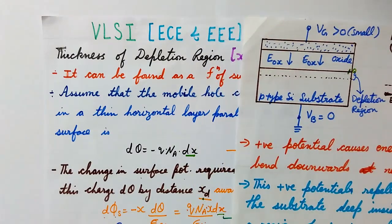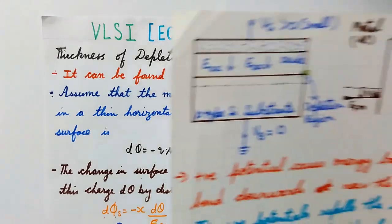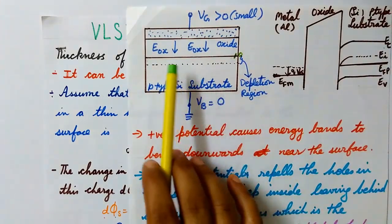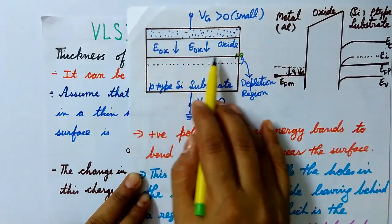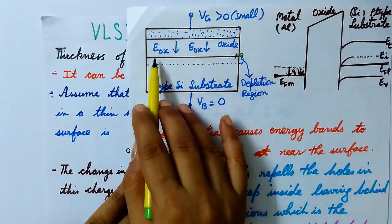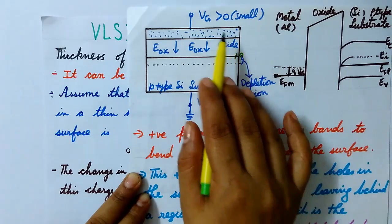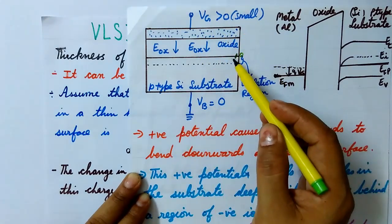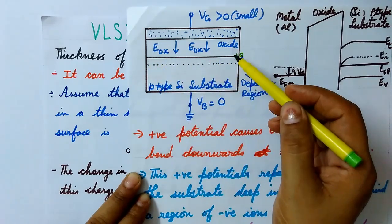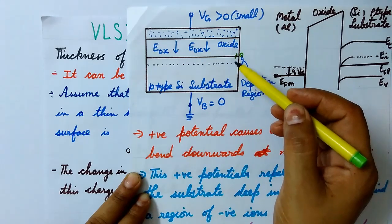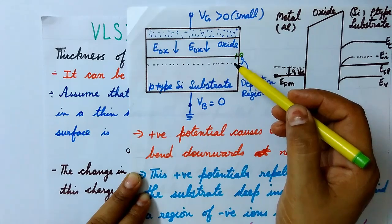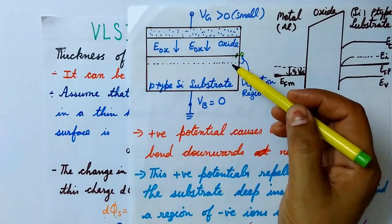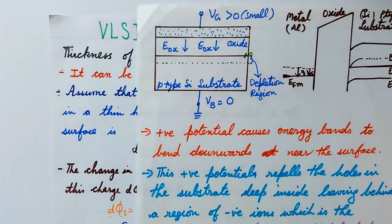When we apply a small positive gate voltage, the holes move away from the surface — the interface where the oxide layer and the substrate layer meet. When a small positive gate voltage is applied, it pushes the holes away from the surface, leaving behind a depletion region where there are no mobile charge carriers. Whenever a hole moves away, it leaves behind a negatively charged acceptor ion.